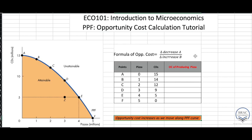The formula of opportunity cost is given here, and it is quite simple. It is: change in the decrease of product A divided by change in the increase of product B. As you know, when we move along the PPF curve one product increases and the other decreases, so this formula should make exact sense to you.